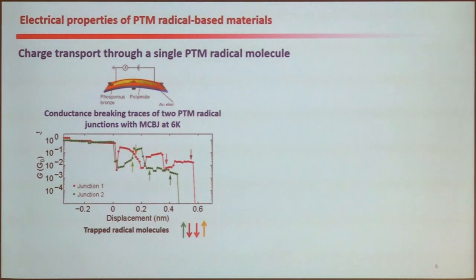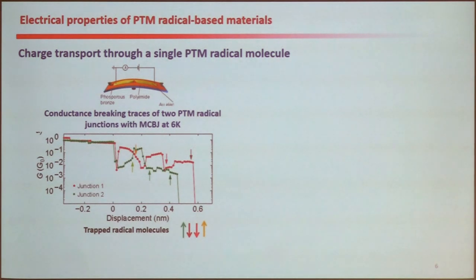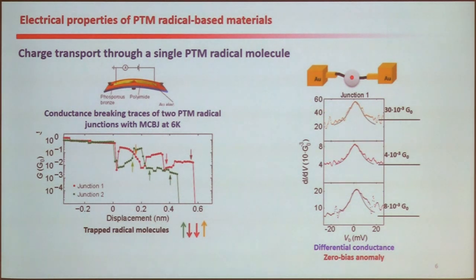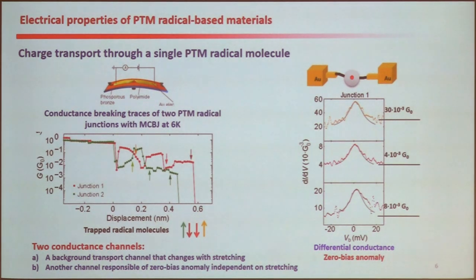These are the conductance traces of two radical junctions — one in green and another in red. You can see these plateaus correspond to the molecule in different positions, different extensions, and different deformations. It is possible to measure, for each of these conformations, the differential conductance. Here are the differential conductance measurements of three of these plateaus. There is a background of the differential conductance, and overlapping with this, there is a zero bias anomaly — meaning that transport occurs through two different channels. One channel — the background — changes a lot with the stretching of the molecule, while the other channel responsible for the zero bias anomaly appears quite independent of the stretching.